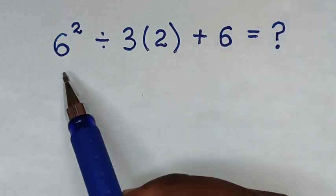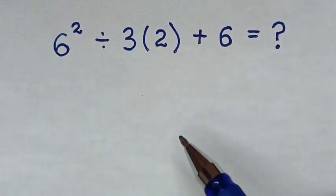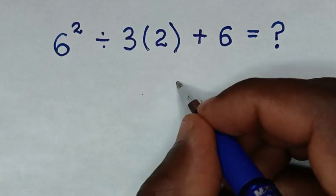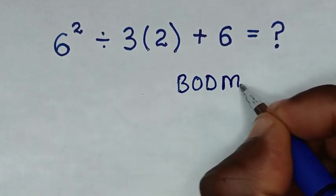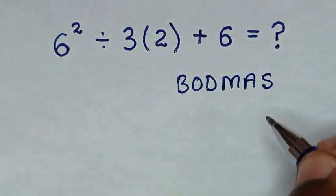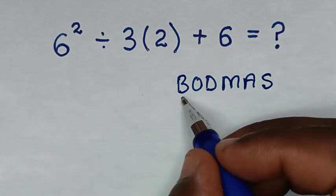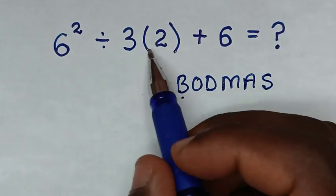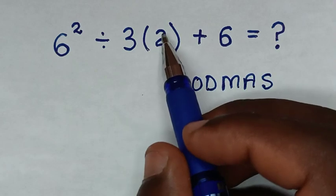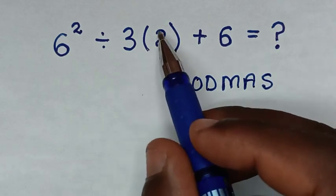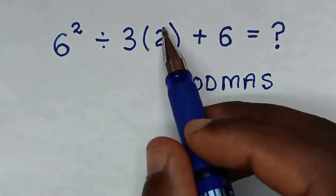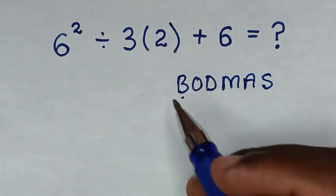From this math problem, let's solve it by using BODMAS rule. BODMAS, whereas B is bracket. In here we have bracket whereas we have 2 inside the bracket. We don't have any operation inside this bracket, so we leave it as it is.